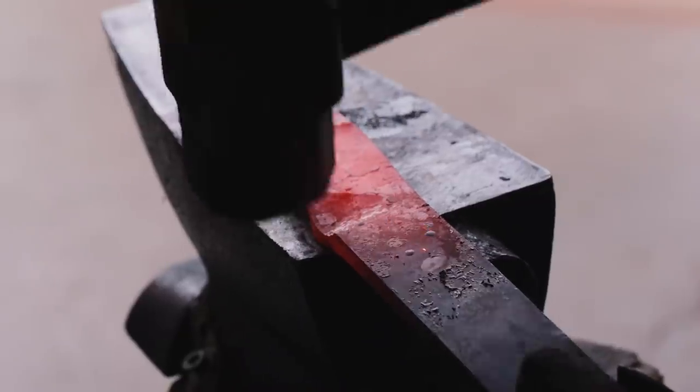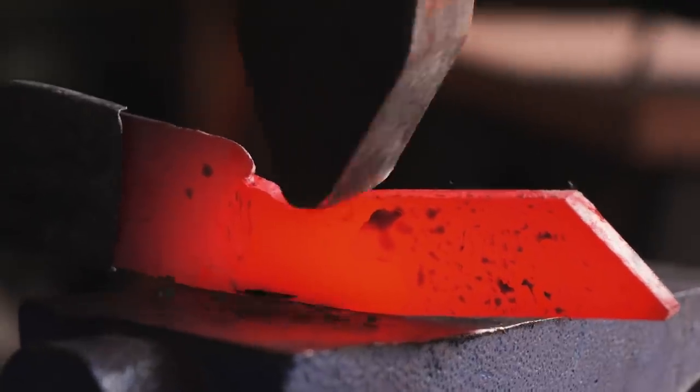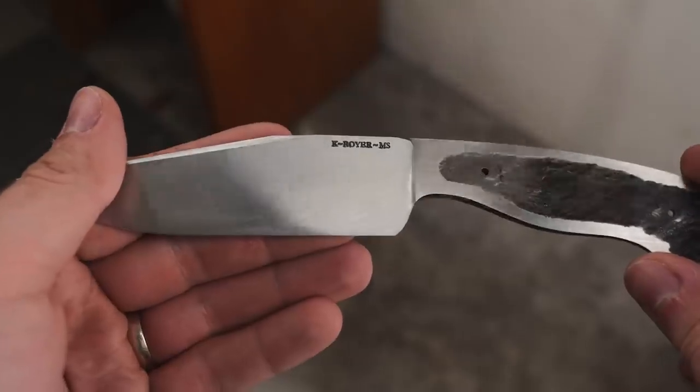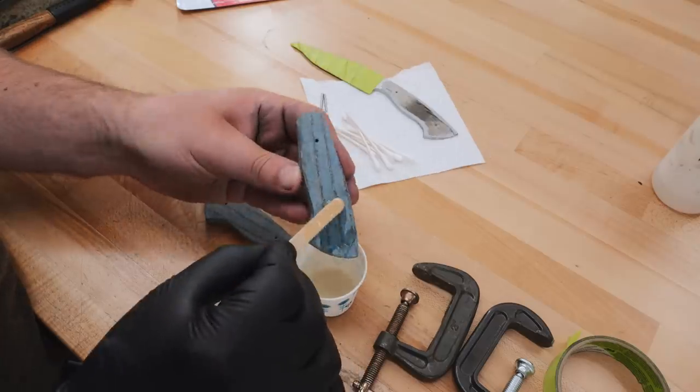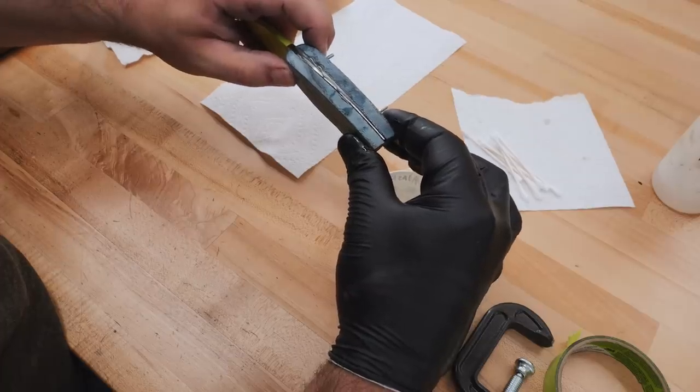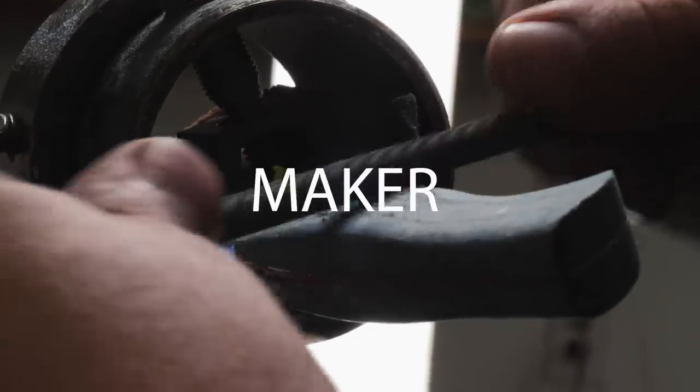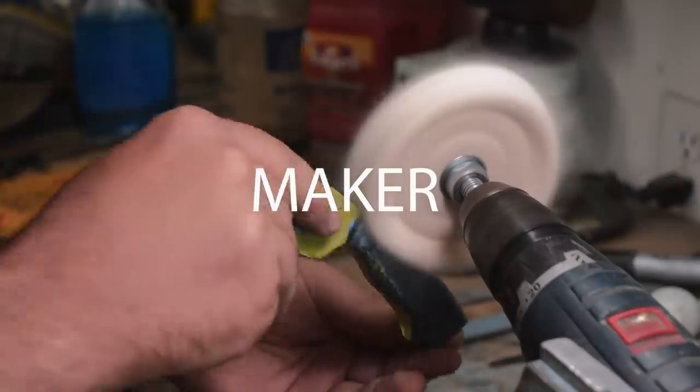Before we do the next thing, I want to let you know about the course I made. It's called the Beginner Bladesmith. If you want to make high-end detailed knives someday, this course is a great place to start. It's currently on sale for 40% off with the coupon code MAKER. Enter that coupon code at checkout and you will definitely be good to go.